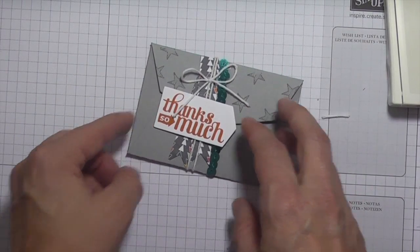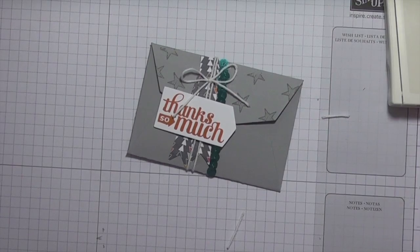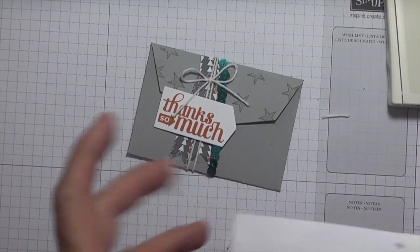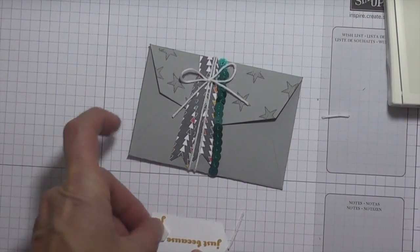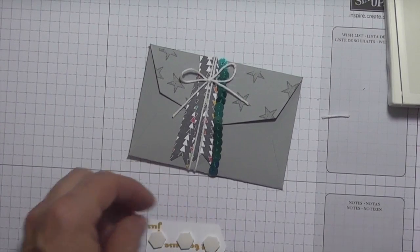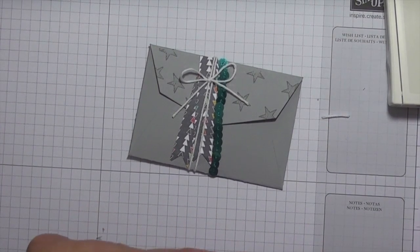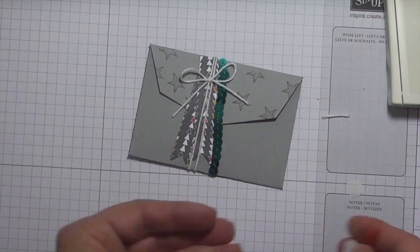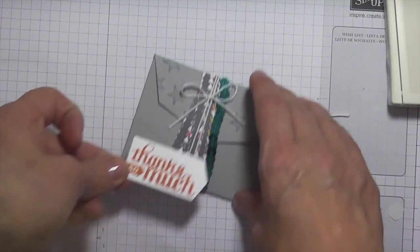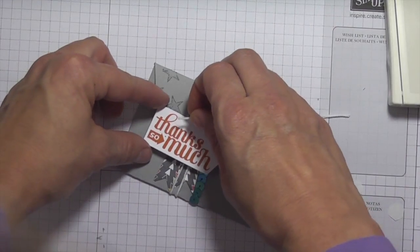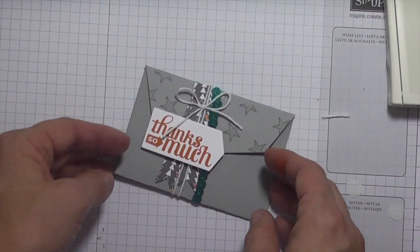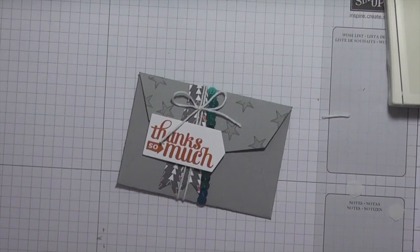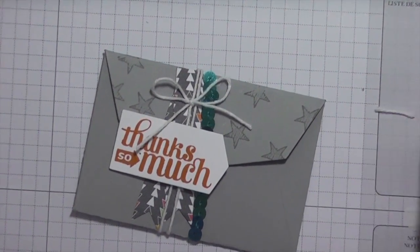The last thing we're going to do is, I tied the bow and cut the tails, and I'm just going to use some dimensionals and put this on the back. Then I'll just pop it up. If you have any questions about any of the products I've used today, please just leave a comment and I'll be more than happy to help you out. If you have any questions on how to use the hostess code, same thing. I do have a video that I recorded at the beginning of my series that shows how to use it, but if you have any questions, please don't hesitate to ask.